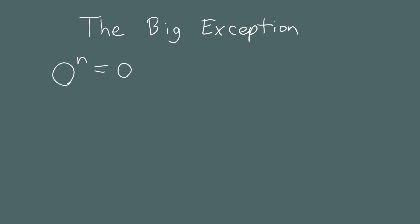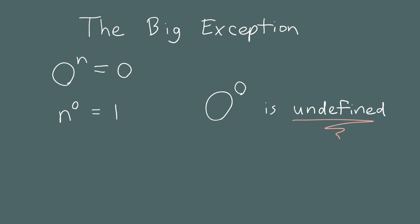Let's look at one big exception. Zero to any exponent is going to be 0, and any number to the 0th power is 1 — with one exception: 0 to the 0th power is undefined. Mathematicians found that any number assigned to it led to mathematical problems, so there's no way to give it a clear, consistent definition. You can take any complex number to any other complex number power, but you can't do 0 to the 0th power. So you now know how to take any number and raise it to a positive integer power, a negative integer power, or the 0th power.